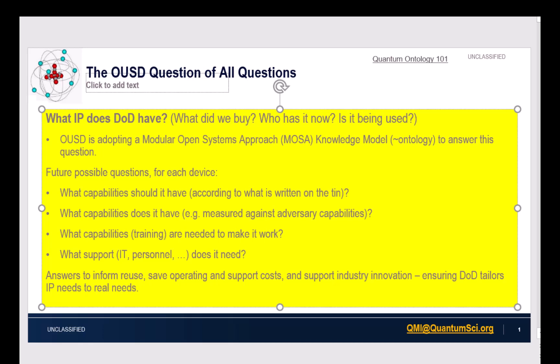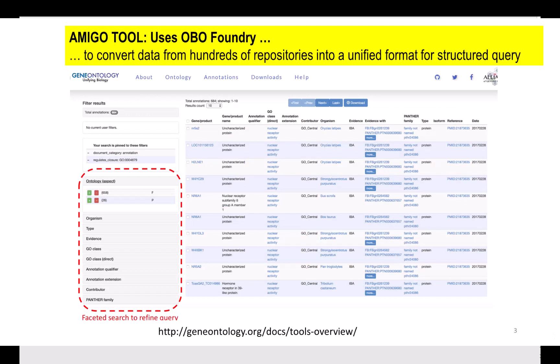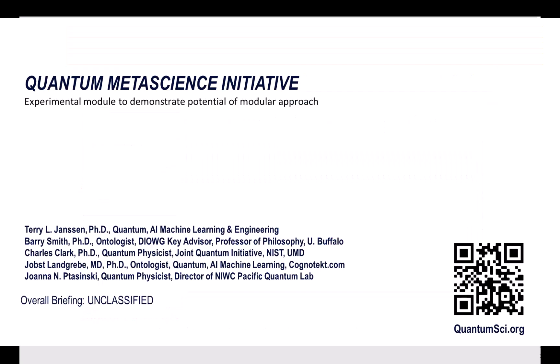You all know about how modular ontologies work. You all know the reason why we need modular ontologies — because if we build ontologies in a one-off way, no one else will ever use them, and so they will die. One way in which the OVO Foundry and the DIOG Foundry will help people like the OUSD is by using tools like the Amigo tool, which is a very impressive tool for converting data from repositories into a format which enables structured query. We're working on building a portal which will enable that sort of query, based also on modular ontologies in the area of quantum physics.